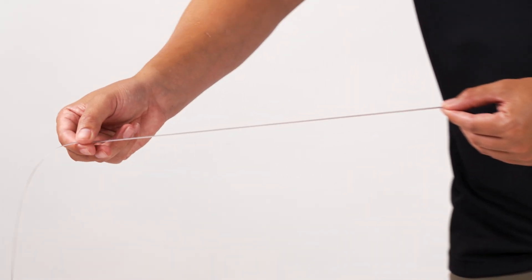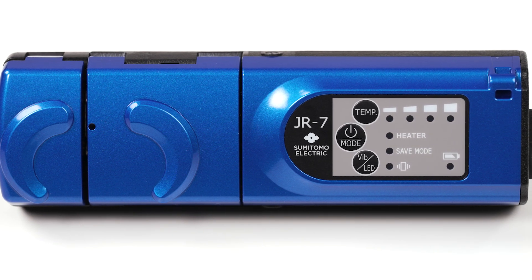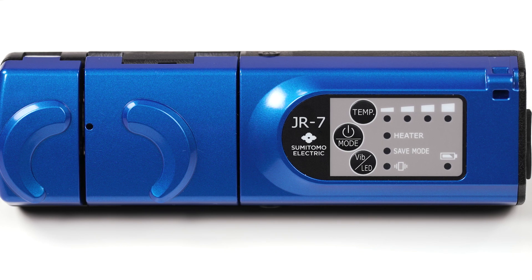This is how you prepare a ribbon fiber for splicing. Use the JR7 thermal jacket remover to remove the ribbon's matrix and fiber buffer.